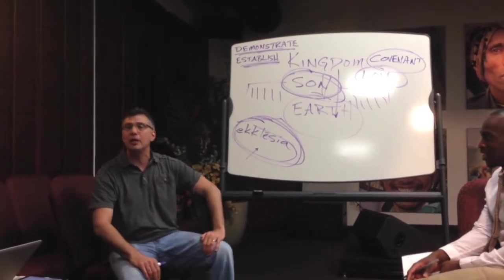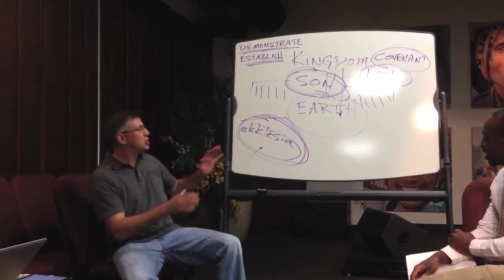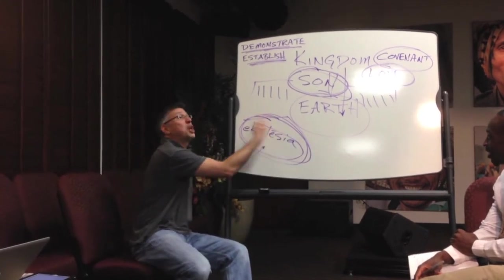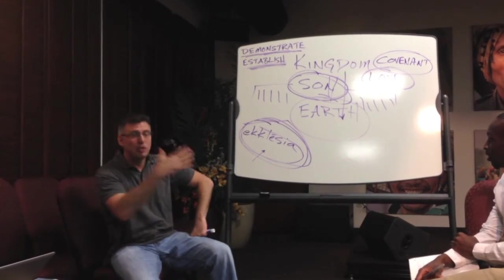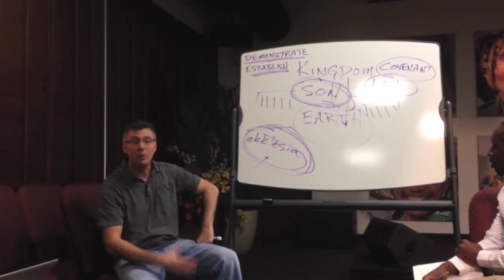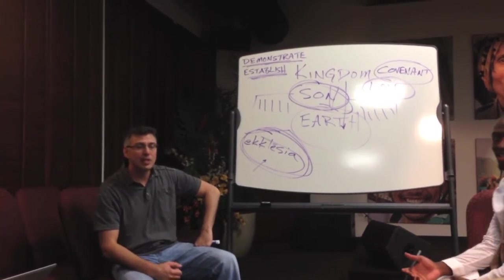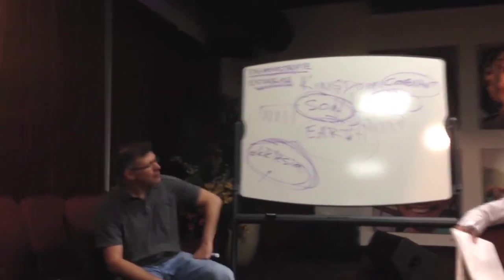And when they form community, which is just to illustrate the further application of this. When they form community, that's covenant that establishes the kingdom. So if you've got a bunch of disciples who love the Lord, but all they do is assemble, they're not in covenant relationship, then you don't have the kingdom established. Not in a city. Not in a way that shakes the city. Does that make sense?